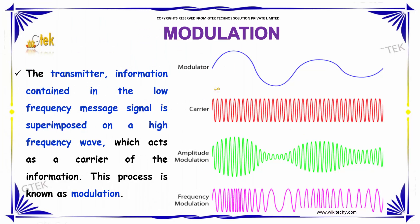Modulation. The information contained in the low frequency message signal is superimposed on a high frequency wave, which acts as a carrier of the information. This process is called modulation.